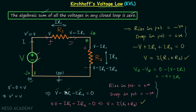V, I·R1, and I·R2 are all voltages — potential differences. You cannot include the potential at a single point in a KVL equation. You cannot include VA or VB alone, but you can include VA minus VB because that is a potential difference. This is how to deal with such problems.